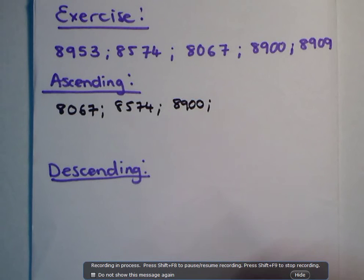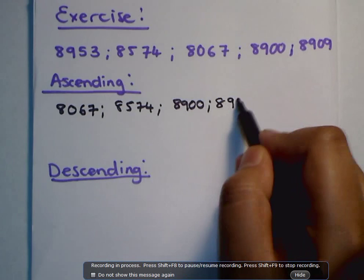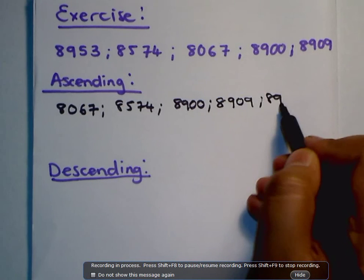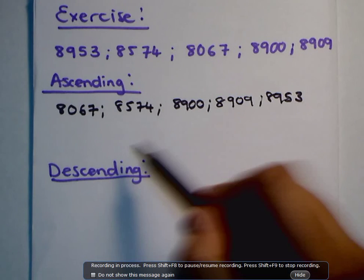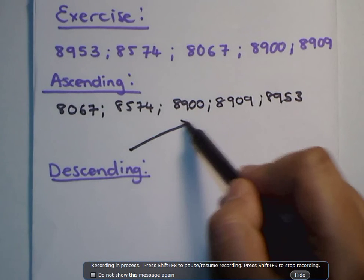Yes. Then we have 8909. Then we have 8953. Those are my numbers from ascending order. So we were going from something small to something big.